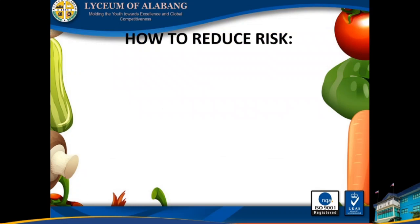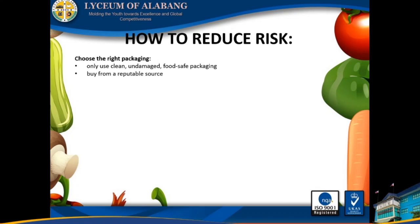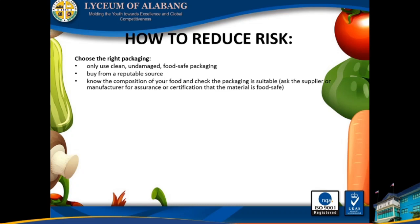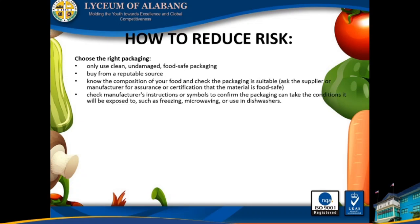How to reduce risk. Choose the right packaging: only use clean and undamaged food-safe packaging. Buy from a reputable source. Know the composition of your food and check that the packaging is suitable. Ask the supplier or manufacturer for assurance or certification that the material is food safe. Check manufacturer's instructions or symbols to confirm the packaging can handle the conditions it will be exposed to, such as freezing, microwaving, or use in dishwashers.